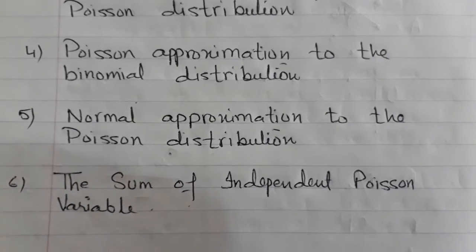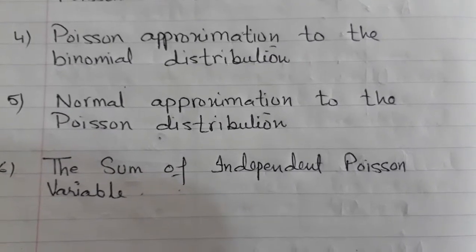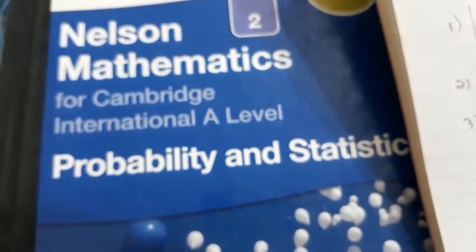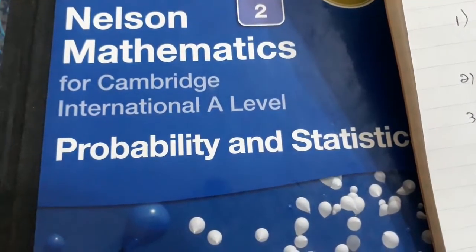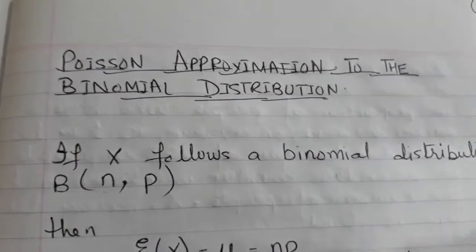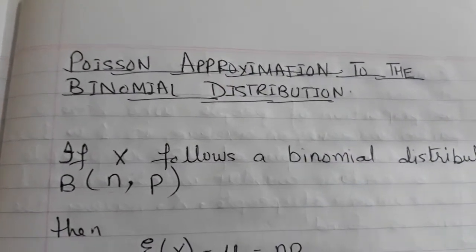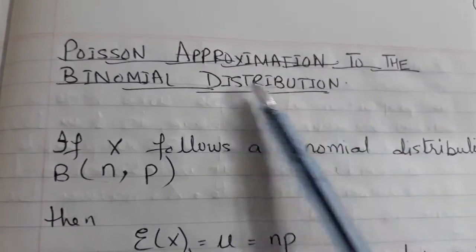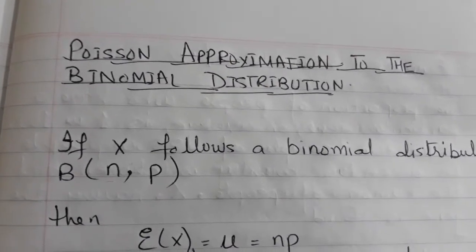These three concepts we will cover with the help of past paper questions taken from the CIE exam. For explanation purposes, I have used this book — the new edition of the Crawshaw Statistics book. So let's see the concept of Poisson Approximation to the Binomial Distribution. A question is given to you in Binomial Distribution, and you will use Poisson to get the probability — this is the meaning of the concept.